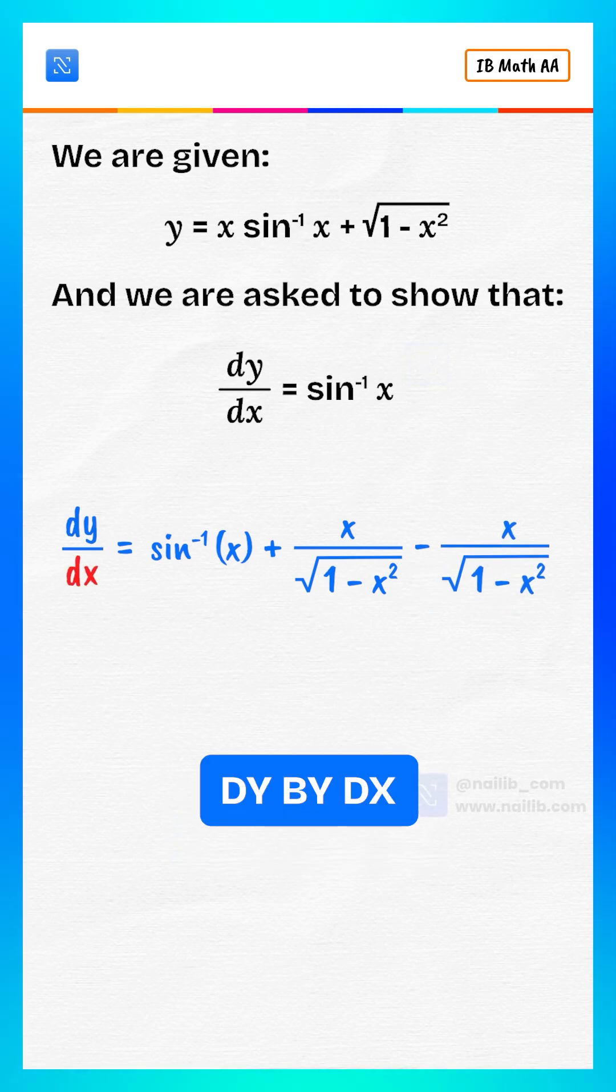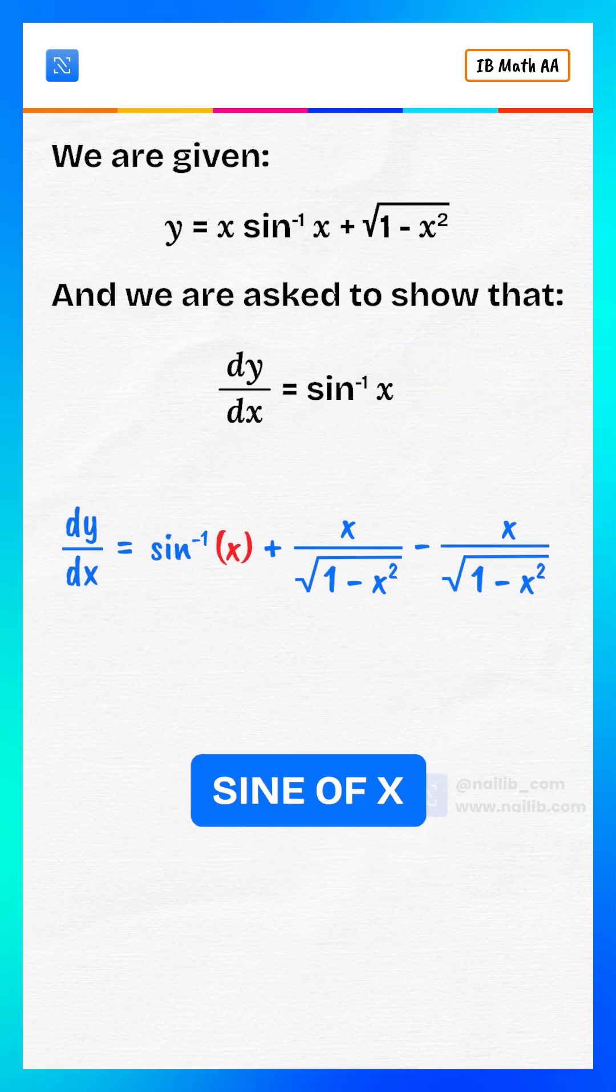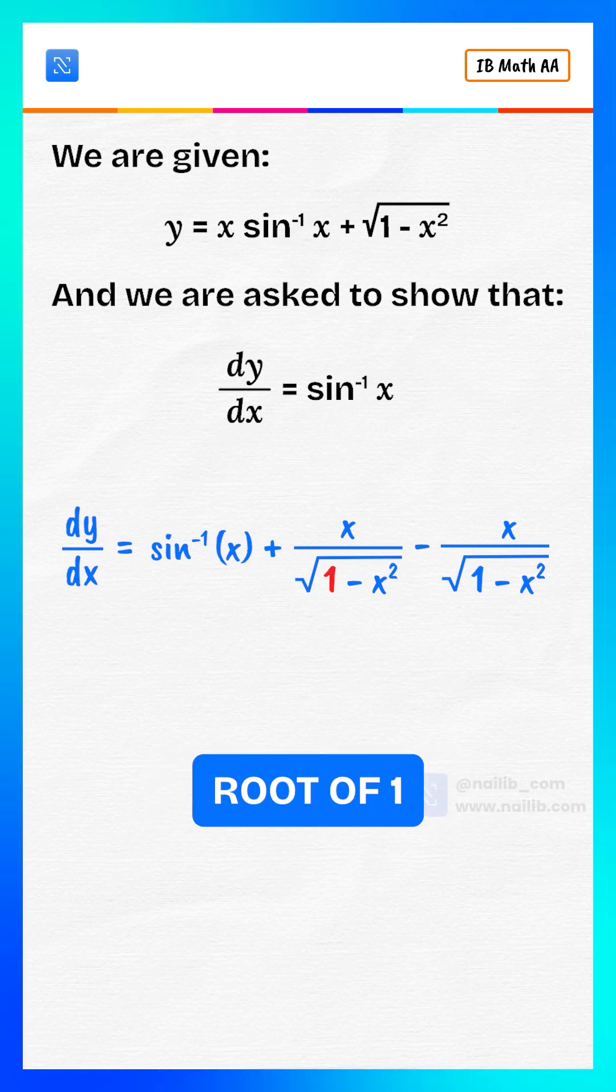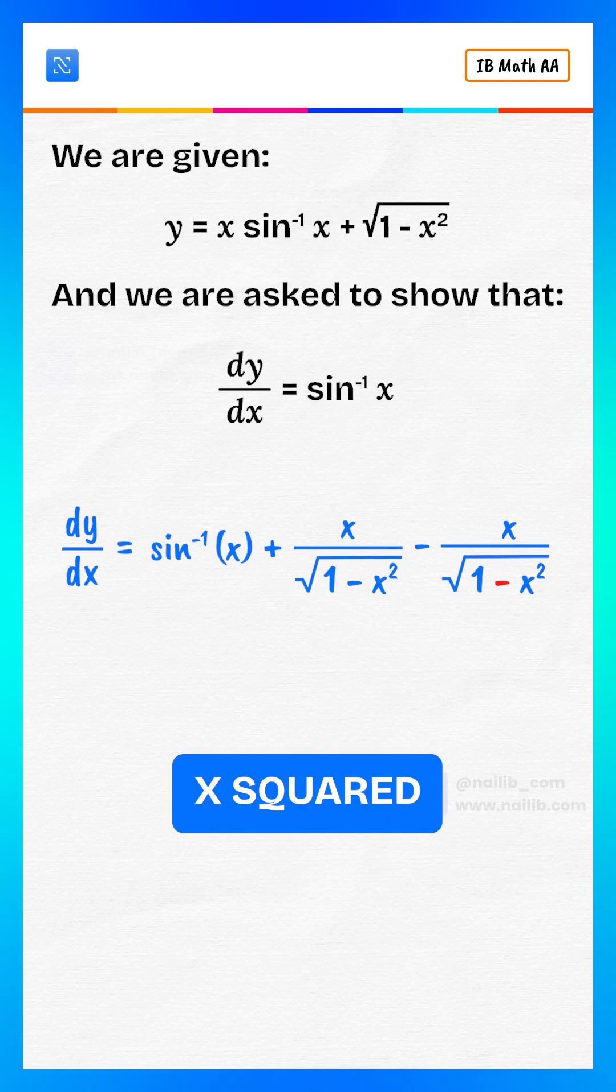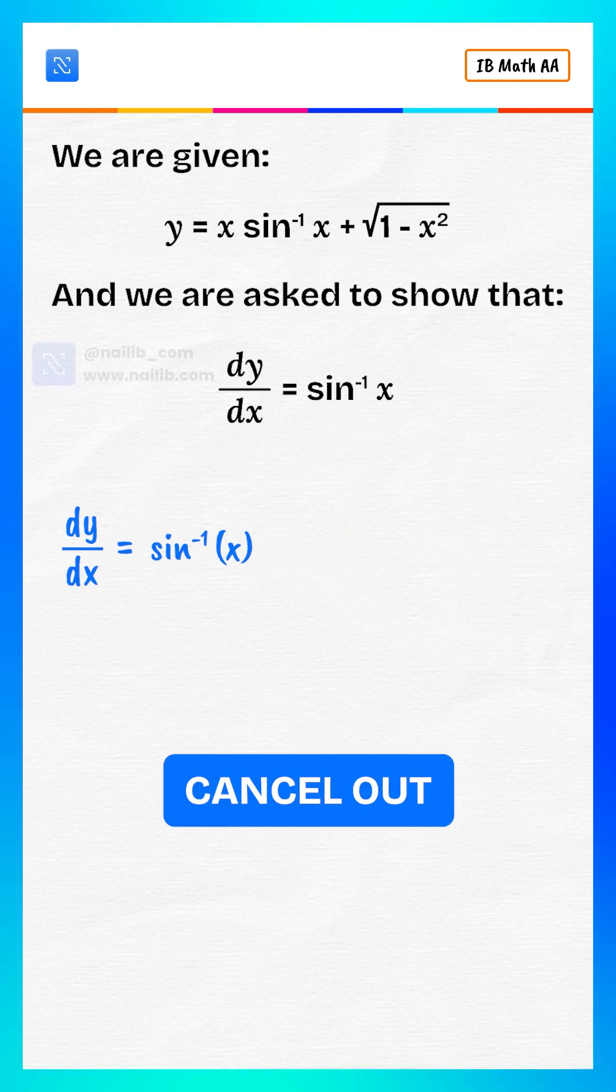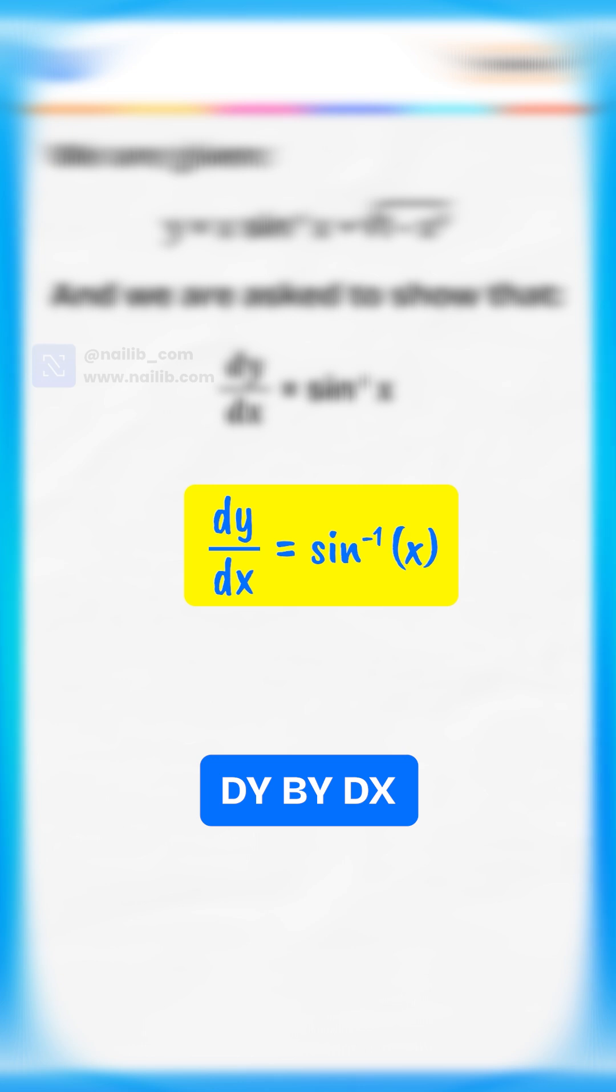dy by dx equals inverse sine of x plus x over square root of 1 minus x squared minus x over square root of 1 minus x squared. The two fractions cancel out, so we are left with dy by dx equals inverse sine of x.